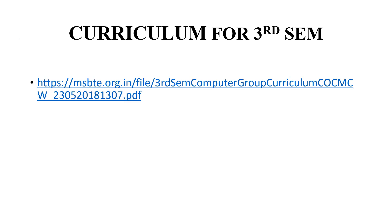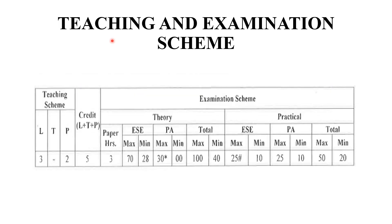All of you refer to the provided link for the 3rd semester syllabus. Regarding the teaching and examination scheme: there are 70 marks for the theory paper, 30 marks for Unit 1 and Unit 2 tests, and marks for a micro project — totaling 100 marks for theory. Then 25 marks for the external practical exam and viva, and 25 marks for the manual, totaling 50 marks for practical.